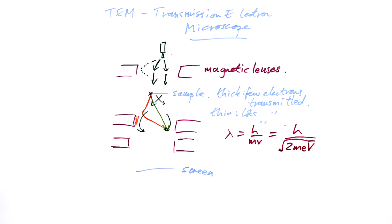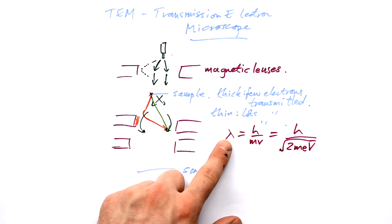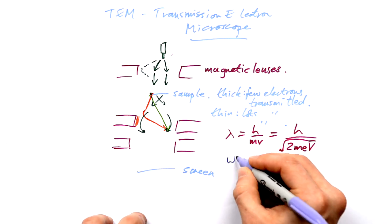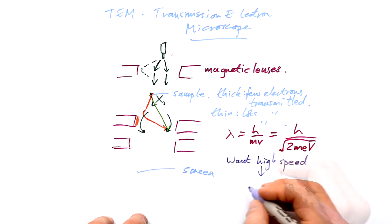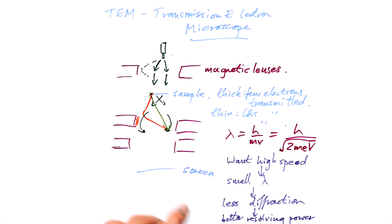In order to get a nice crisp image at the bottom here, we want as little diffraction as possible. To get as little diffraction as possible, we want a smaller wavelength. So we want a high speed. That gives us a small wavelength, which means less diffraction. And we can say that results in better resolving power. In other words, it just gives us a much cleaner, less fuzzy picture so we can see smaller things in the sample.